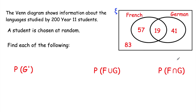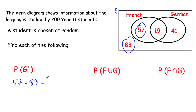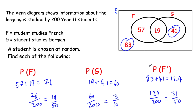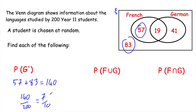For P(G') — not studying German: the students not in circle G are 57 (only French) and 83 (neither), so 57 plus 83 equals 140. The probability is 140/200, which simplifies to 7/10. We can verify: P(G) was 3/10, and 1 minus 3/10 equals 7/10.